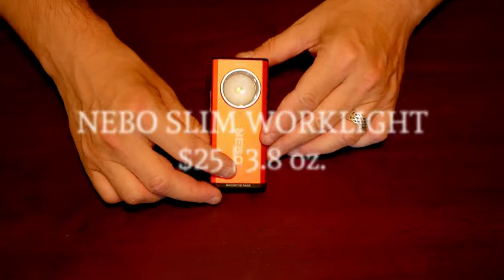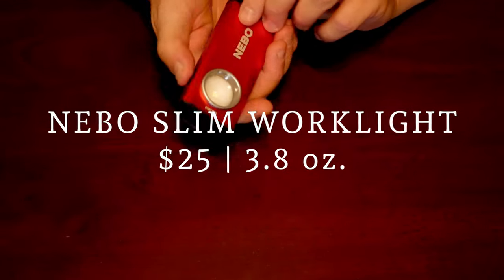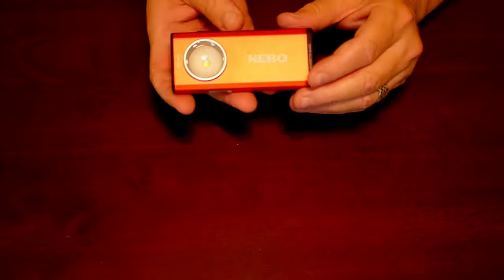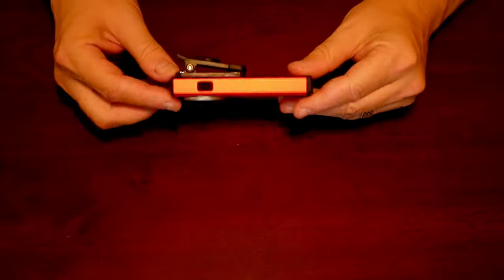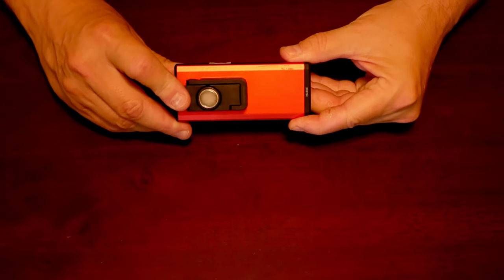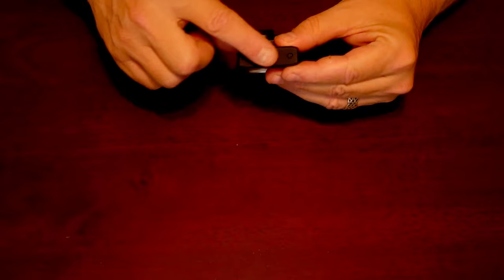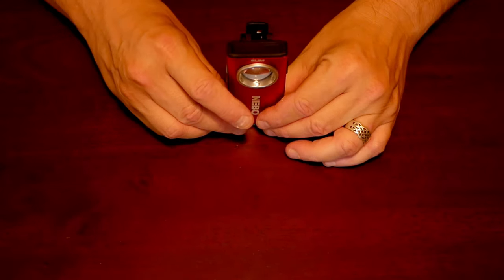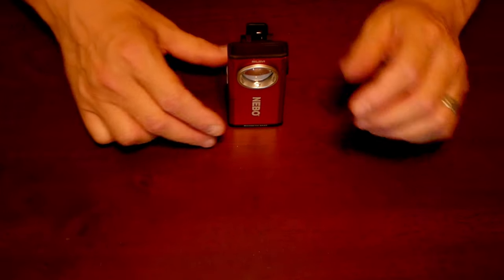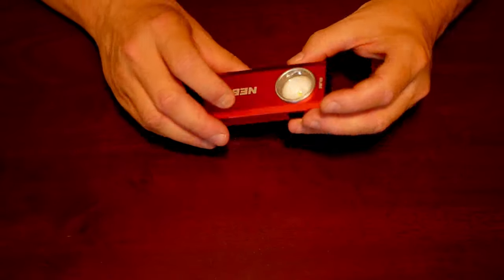My workhorse flashlight is the Nebo Slim Worklight. This is a 500 lumen flashlight that has numerous placement capabilities. It's got a very strong clip. It's also got a hook that it can hang from, and two different magnets to either hold it vertically or horizontally. It's made of anodized aluminum and has a 10-hour rechargeable battery.